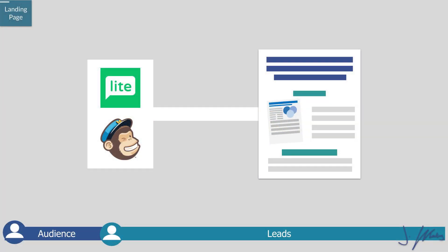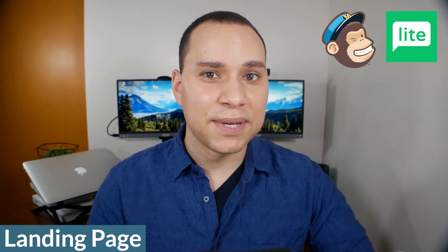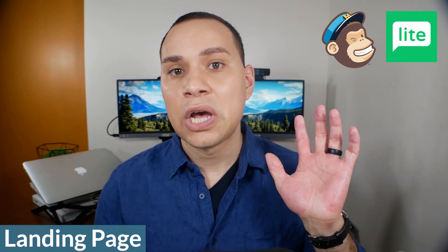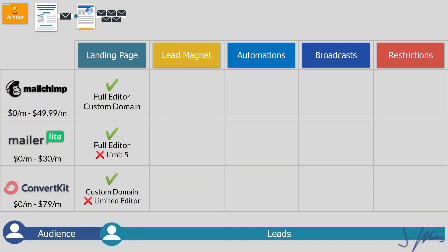MailerLite and MailChimp give you a lot more flexibility, with MailerLite having the best flexibility and customization for landing pages. Although you only get five landing pages with MailerLite — they give the best experience but limit you, unlike MailChimp and ConvertKit. The unlimited landing pages with MailChimp, you'll learn later, isn't really all that important.